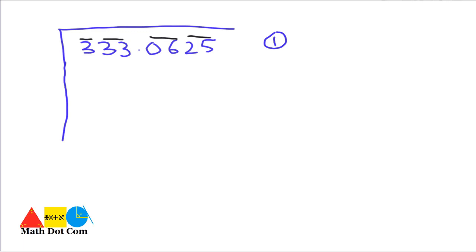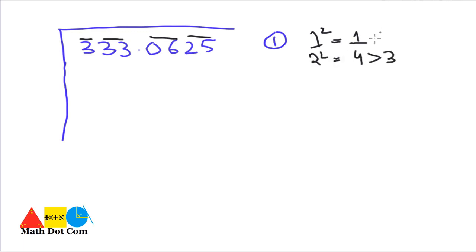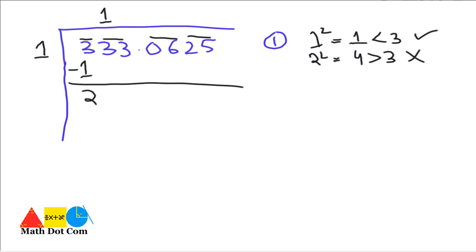Here the first digit is 3. If we take 1 and square it, we get 1 — it is less than 3. If we take the square of 2 we get 4, but that is greater than 3. So we go with 1. We write 1 as the quotient: 1×1 = 1, and 3 minus 1 = 2. Then we bring down the next pair '33', giving us 233.